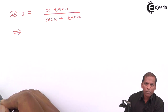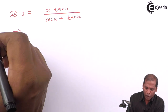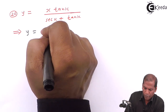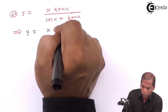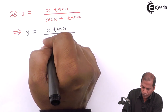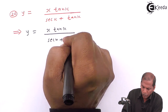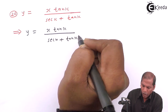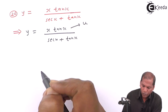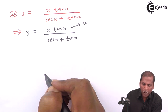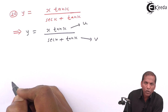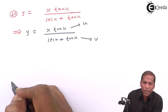The solution is quite simple. We start with y equal to x times tan(x) upon sec(x) plus tan(x). Here, the numerator x times tan(x) is considered as u, and the denominator sec(x) plus tan(x) is considered as v. Now we differentiate the above function with respect to x.